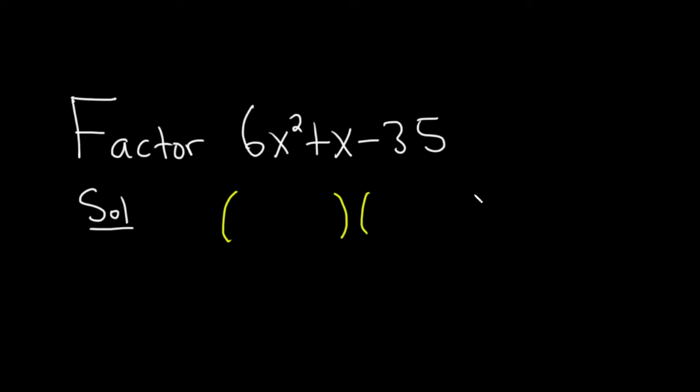When you're using the guessing method, you write the parentheses like this, then you have to figure out what goes here. 6 is 2 times 3, so let's try 2x times 3x.